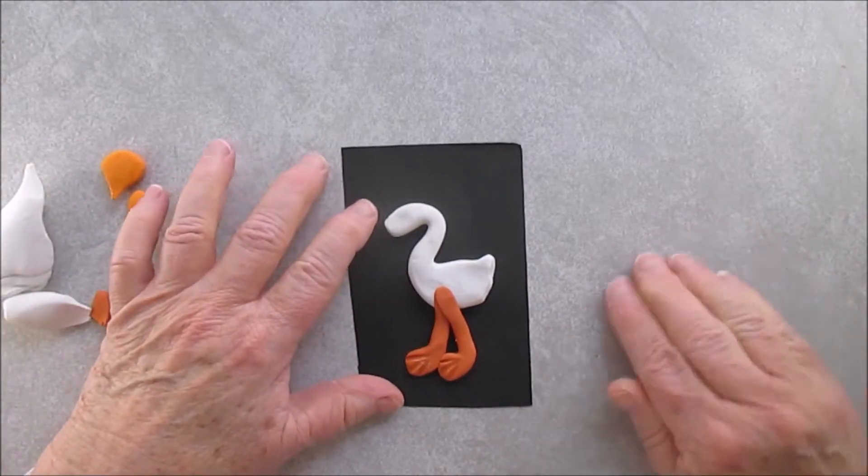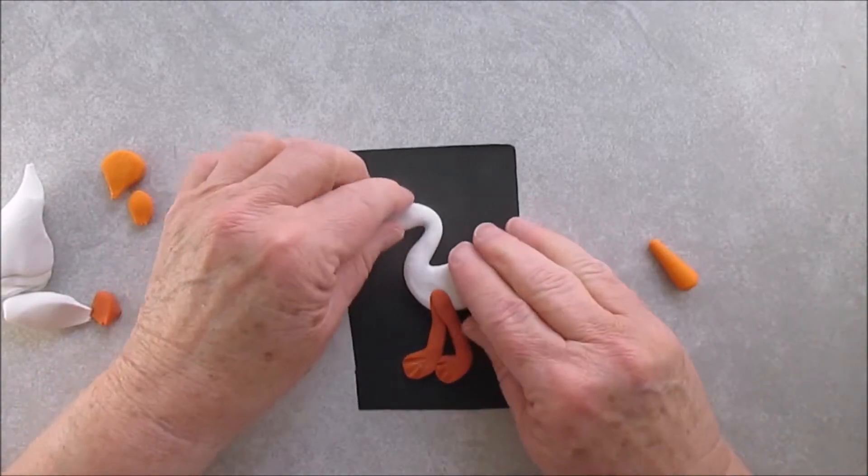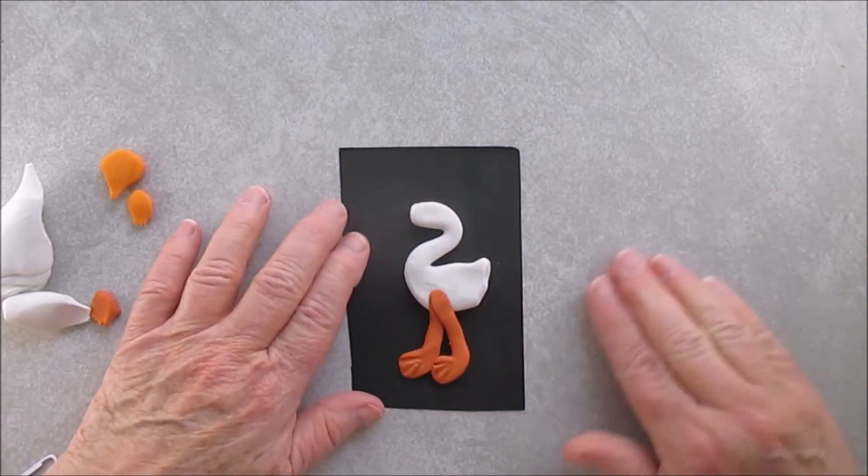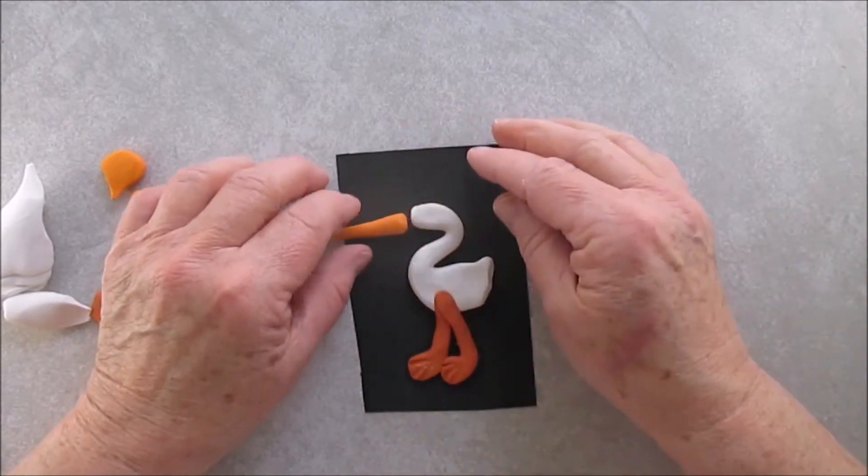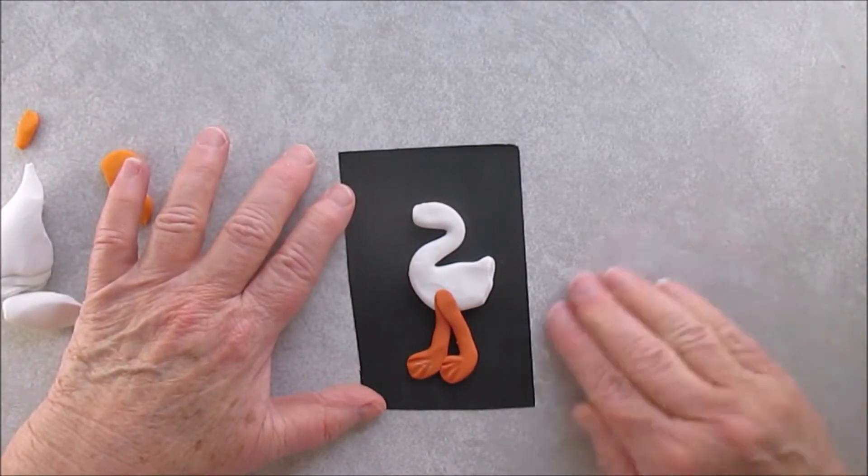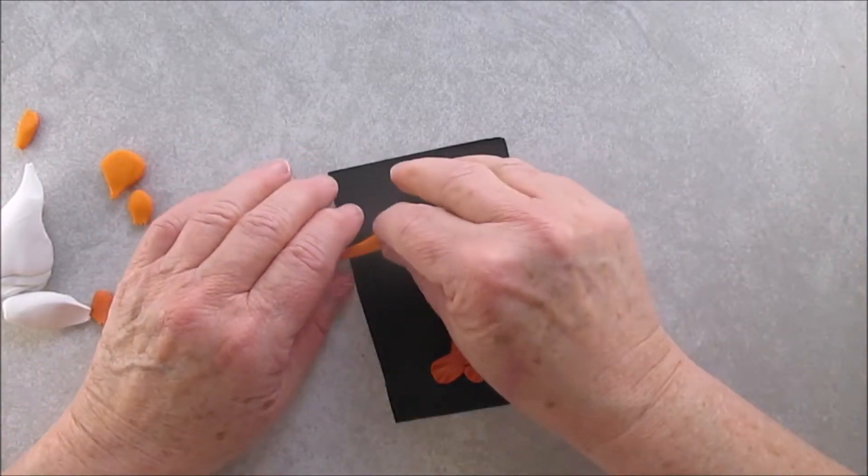Now I decided to make my beak just a little bit lighter than the legs. You can make it the same color as the legs or yellow, whatever you want. I know I made the beak a little big, but I just kind of like the way that looks. You can also make it smaller if you want.